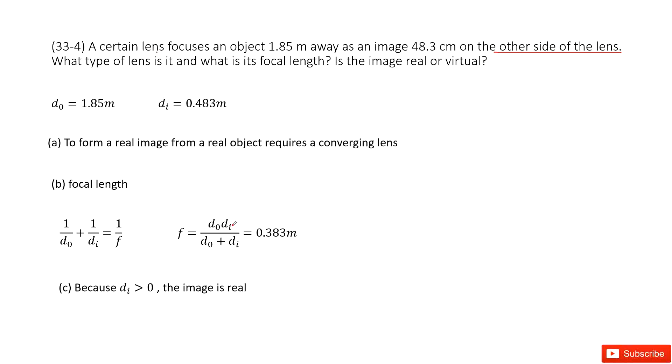We just write down the thin lens equation. There you can see d_o is given, d_i is given, the focal length f is not given, but we can rearrange this equation to get the formula for focal length f. Input all the given quantities and you get the answer.